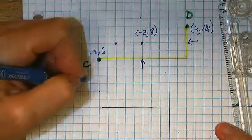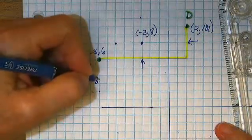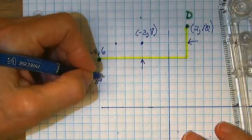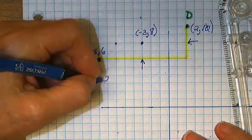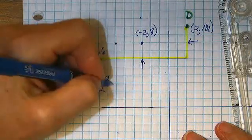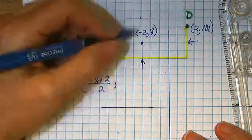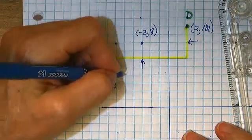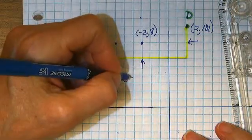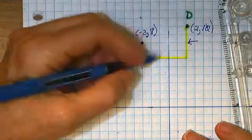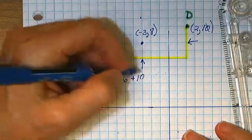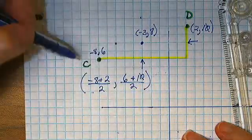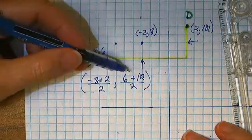So let's do the problem that way. x1, negative 8 plus x2 divided by 2. y1 plus y2 divided by 2, the average of the x's and the average of the y's.